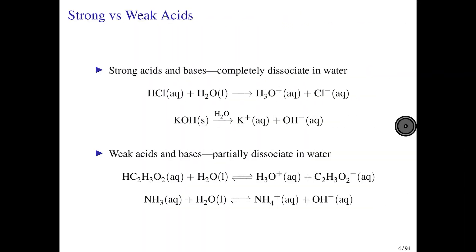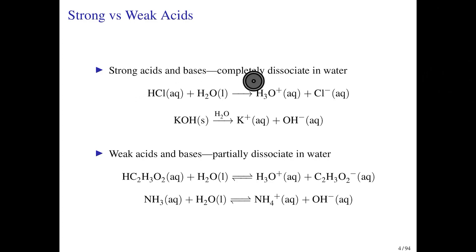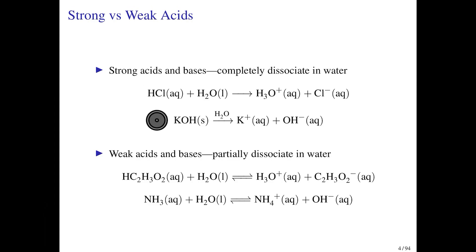Just like you can have a strong or weak electrolyte, you can also have a strong or weak acid. A strong acid and a strong base are ones that completely dissociate in water. For example, hydrochloric acid donates a proton to water giving you hydronium and leaving behind chloride, and effectively 100% of the HCl in solution will dissociate. Likewise, potassium hydroxide is a very strong base — when it dissolves in water, it completely dissociates and forms hydroxide.